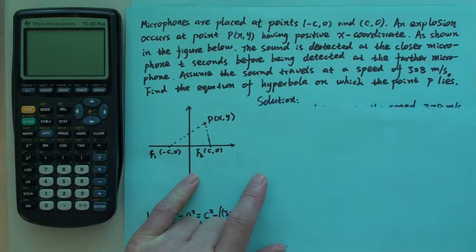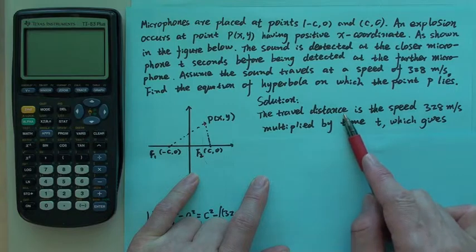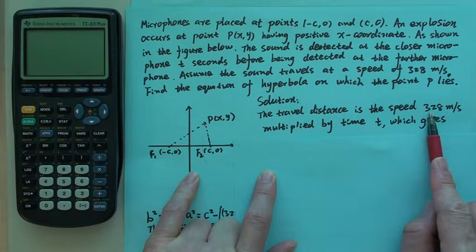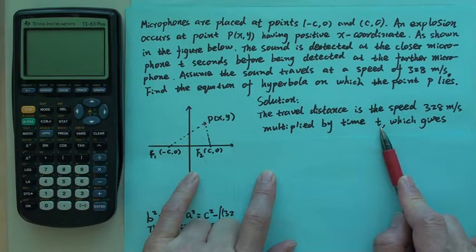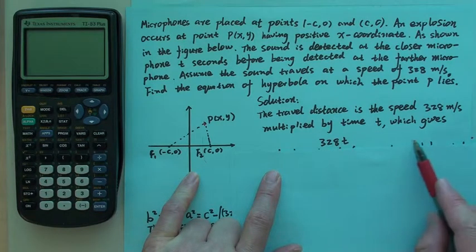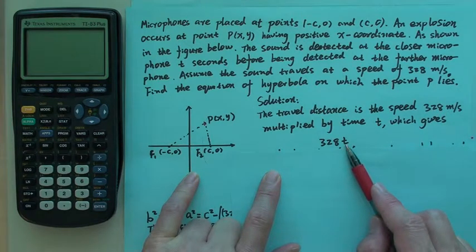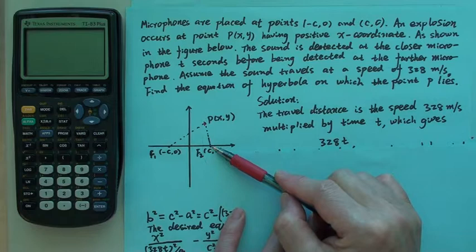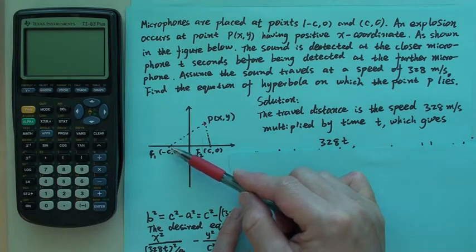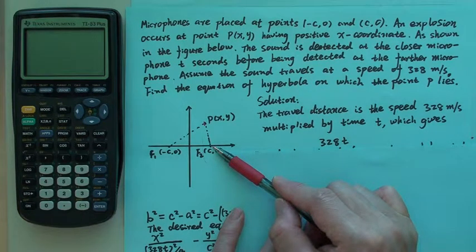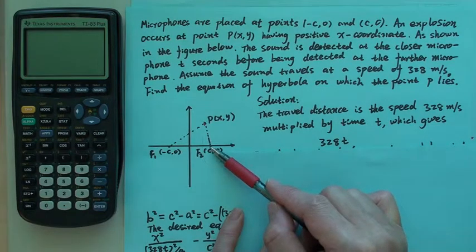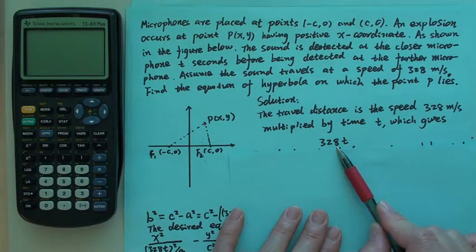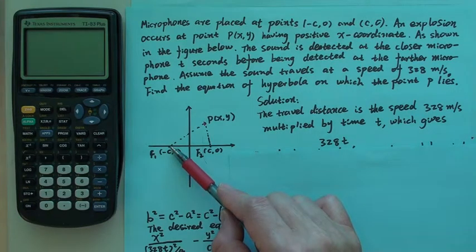First thing we need to understand is that the travel distance of sound is the speed multiplied by the time. The distance is always speed times time. In our case, that is 328 meters times time. We are told that the closer microphone hears the explosion first, which is T seconds ahead, and then the sound will travel 328 times T more meters to reach the second microphone.